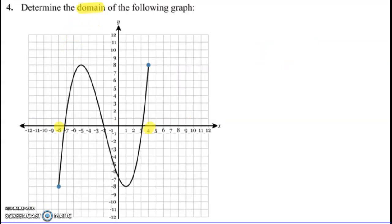This one says domain, so we'll go to the farthest to the left, which is negative eight, to the farthest to the right, which is four, and put both of those in brackets because the dots are filled in.